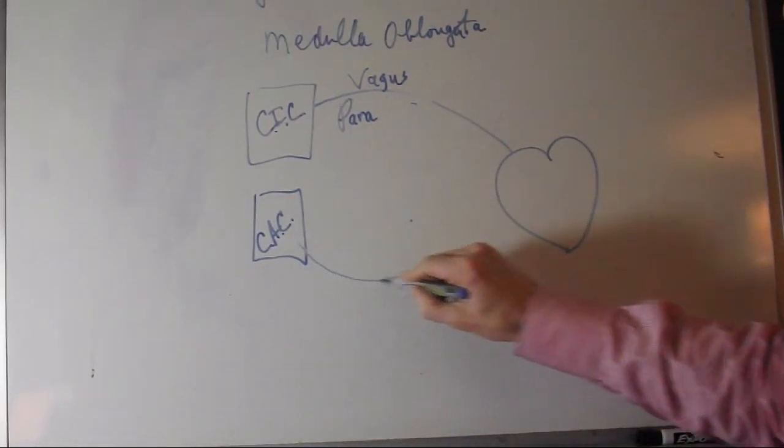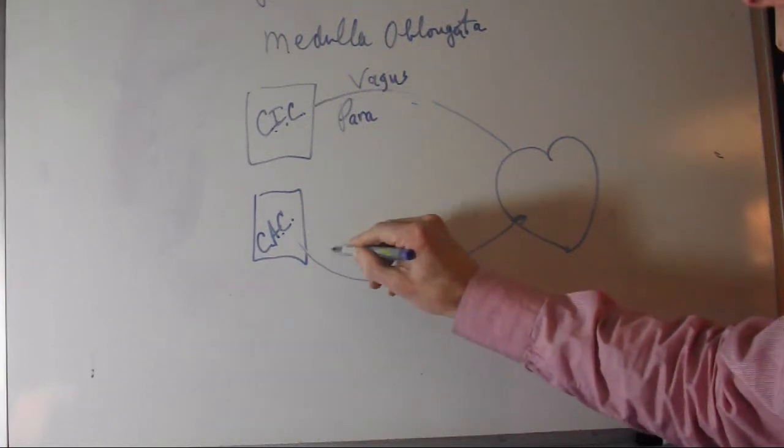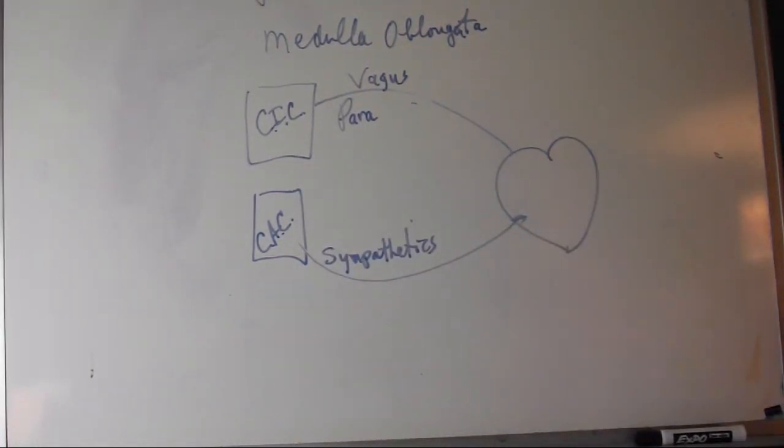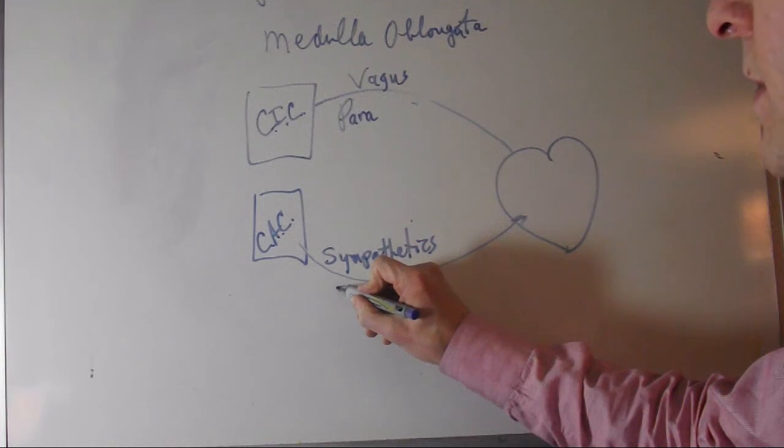From the cardiac acceleratory center arise the sympathetics, which originate from the dorsal spine, the sympathetic chain ganglia.